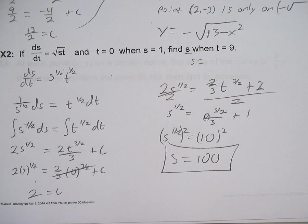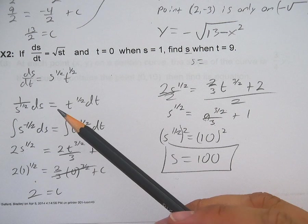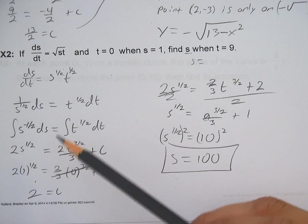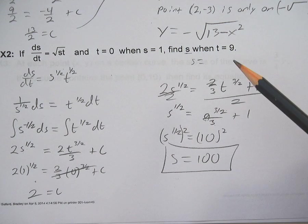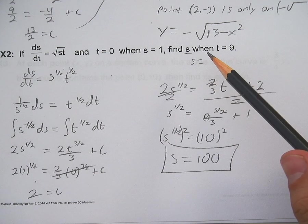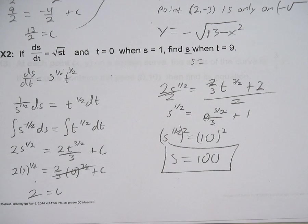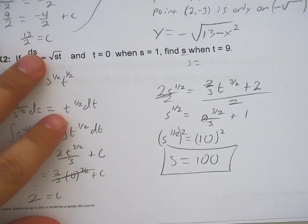Separated my variables. Good stuff. Integrated both sides. Plugged in the initial. Plugged in my new restrictions from up here. Figured out what s is. Relatively straightforward.